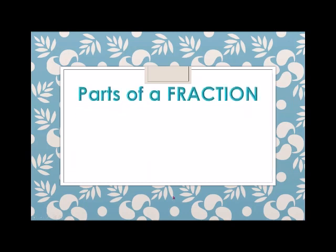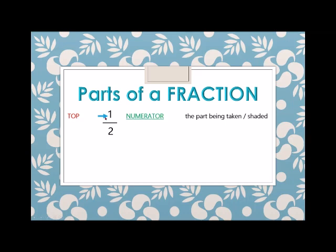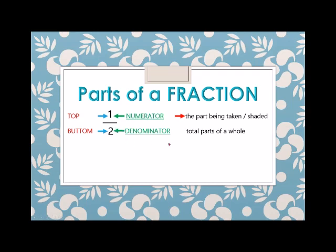Next, parts of a fraction. For example, one half. One is the top number, meaning it's the numerator. The numerator is the part being taken or shaded. The bottom number is two, which is the denominator — the total parts of a whole.